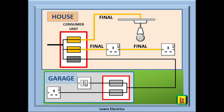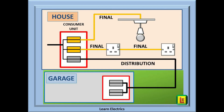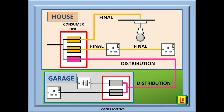Now we need to supply power to the garage. We will install a small consumer unit or garage unit in the garage, with the feed to the garage unit coming from the house consumer unit. From the garage unit we can have sockets, lights, or whatever. Because the cable is between two consumer units — two sets of fuses — it is now a distribution circuit. It is still distributing electricity and has not yet passed the last consumer unit. Let's identify this with a pink colour: pink for distribution circuits.